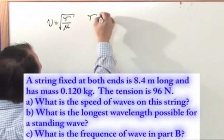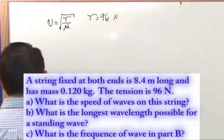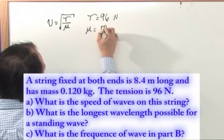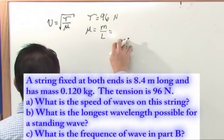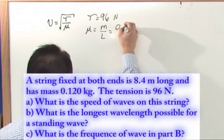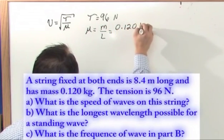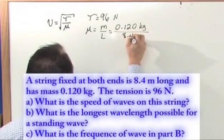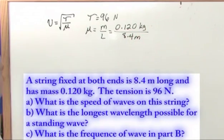In this case the tension was 96 newtons. The mass per unit length: the mass was given to us at 0.120 kilograms and the length was 8.4 meters, which is exactly what we want - kilograms per meter.